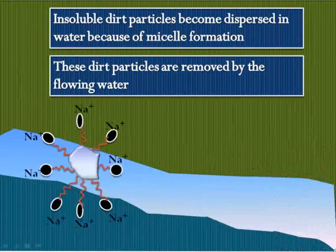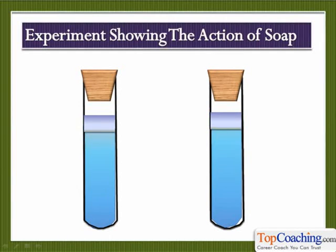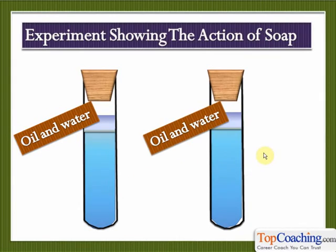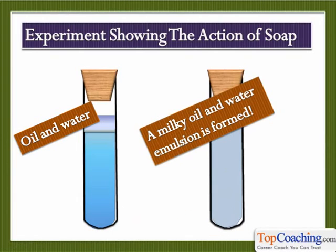Here's an experiment you can easily perform at home about the formation of micelles and the action of soap. What soap basically does is make oil and grease dissolve in water by forming spherical micelles which trap the oil drops and then get dispersed in water. If you take two mixtures of oil and water, initially you will see that the oil is floating above the water because oil and water don't mix. If you add some soap in one of the test tubes, you will see that the oil and water will mix and form a solution — at least a dispersed kind of solution. So basically soap helps oil dissolve in water, and when the water is washed off, the dirt also gets washed off. A milky oil and water emulsion is formed when soap is added to the oil-water mixture.